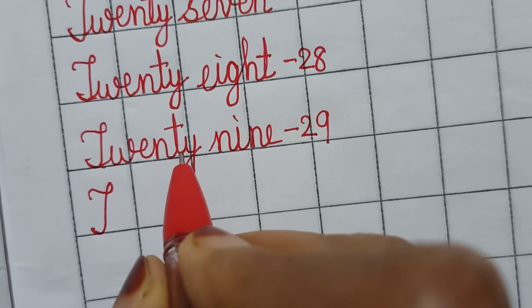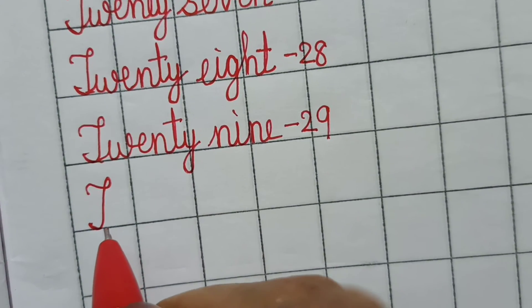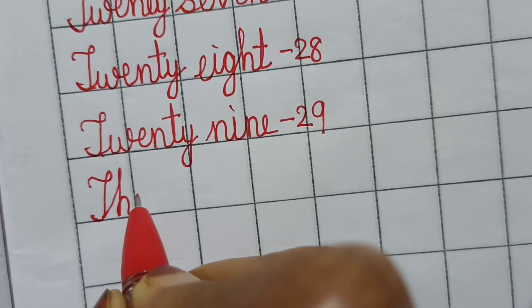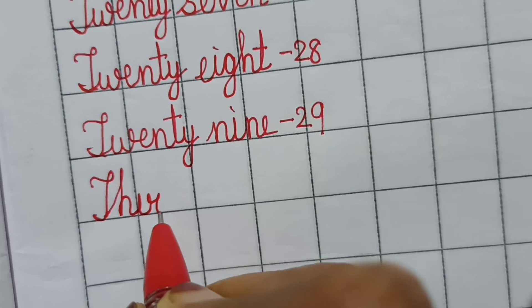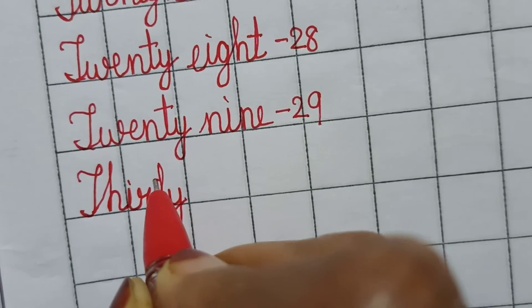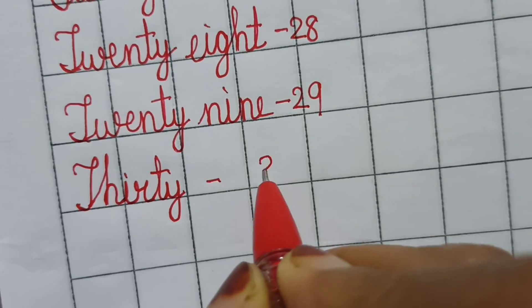So we are not going to write here 20 spelling again. Directly we will write the spelling 30: T-H-I-R-T-Y. This is the spelling of 30.